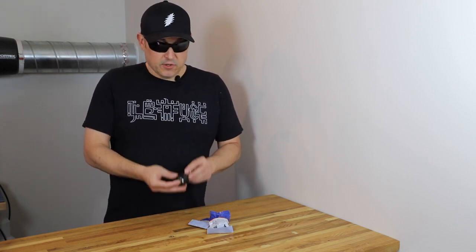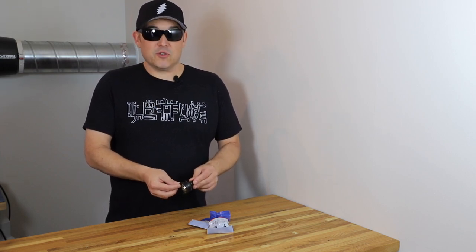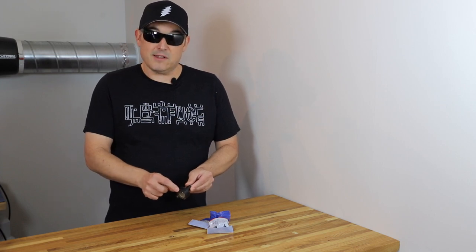One of the great things about the Volcano and Storz & Bickel products is you can pretty much buy any part to replace and fix it yourself. So in this example, our chamber, and this thing's probably eight years old, finally broke, fell off the coffee table and this little plastic leg chipped off.